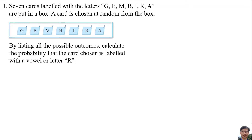Number 1. Seven cards labelled with the letters G-E-M-B-I-R-A are put in a box. A card is chosen at random from the box. By listing all the possible outcomes, calculate the probability that the card chosen is labelled with a vowel or the letter R.